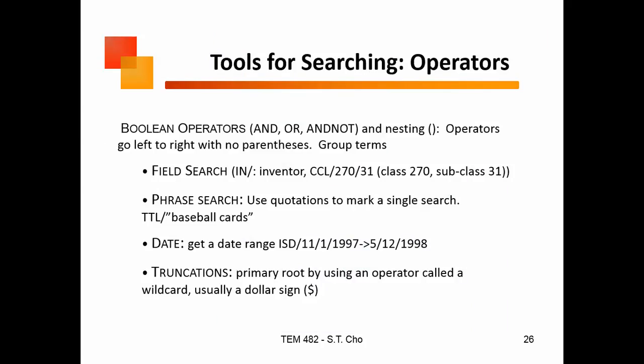You use operators — Booleans: AND, OR, NOT. I won't go through all of this because I think it's pretty self-explanatory. Whether you're doing a field search such as inventor, product class, or date range — and if you need to put in a wildcard, for example if you try to look up a patent by name...